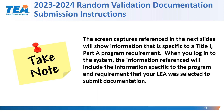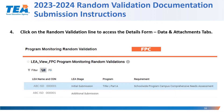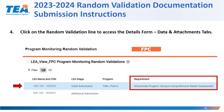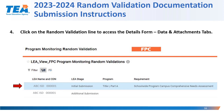Please note that the screen captures referenced in the next slides will show information specific to a Title I, Part A program requirement. When you log into the system, the information referenced will include the information specific to the program and requirement that your LEA was selected to submit documentation for. After you are in the Program Monitoring Random Validation WorkApp, you will be able to locate the line for the initial submission that includes your LEA name and CDN number, the stage of the random validation process, the program you were selected to participate in, and the specific requirements. The LEA should click on the initial submission line to access the details form and data and attachments tabs.